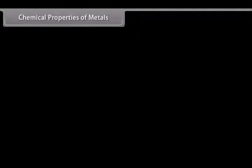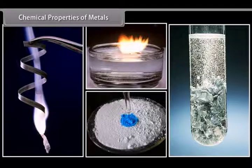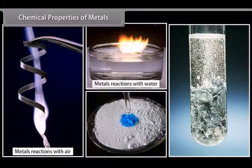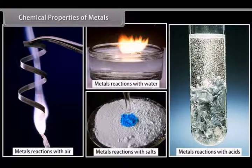Chemical properties of metals. Metals. Let us look at some chemical properties of metals. These properties include reactions of metals with other elements, that is, air, water, acids and other metal salts.